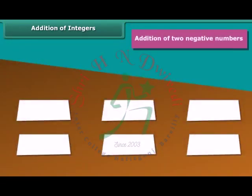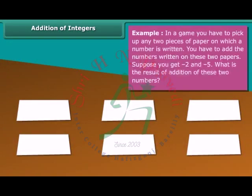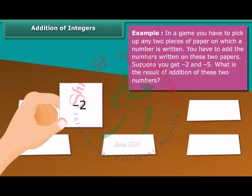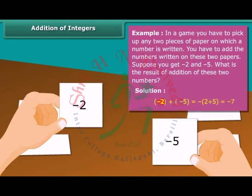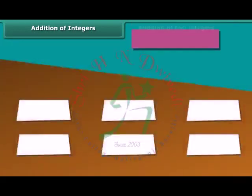Addition of two negative numbers. Example: In a game, you have to pick up any two pieces of paper on which a number is written. You have to add the numbers written on these two papers. Suppose you get minus 2 and minus 5. What is the result of addition of these two numbers? Minus 2 plus minus 5 is equal to minus 2 plus 5 which equals minus 7.